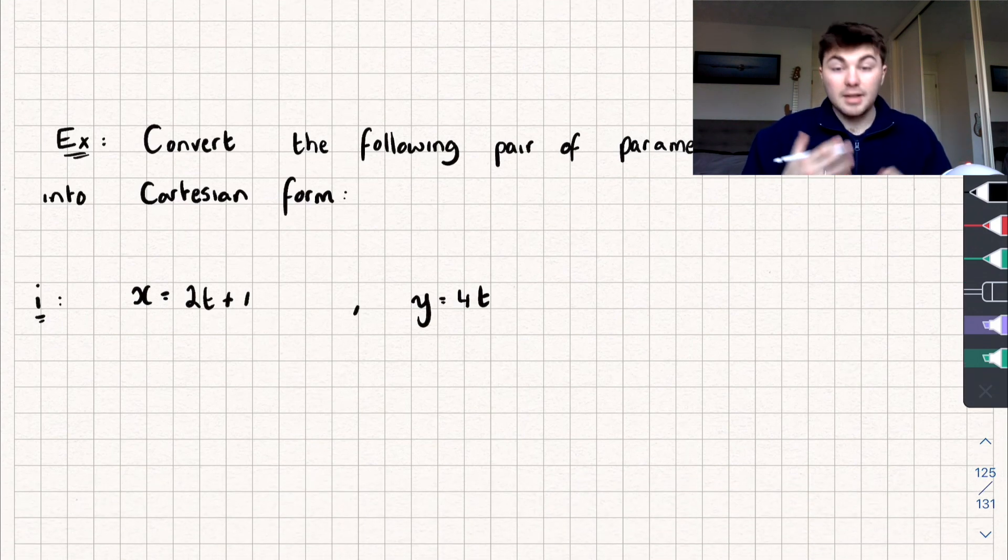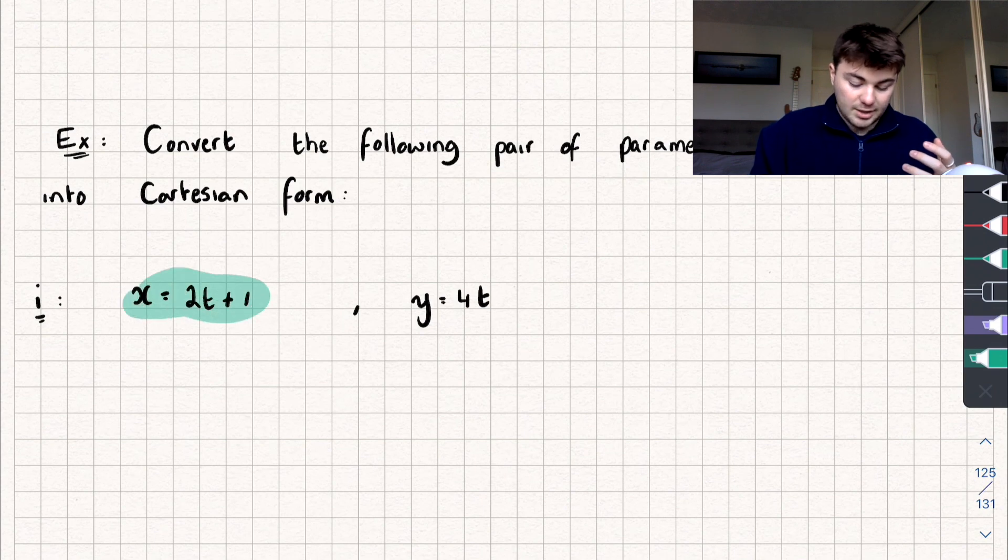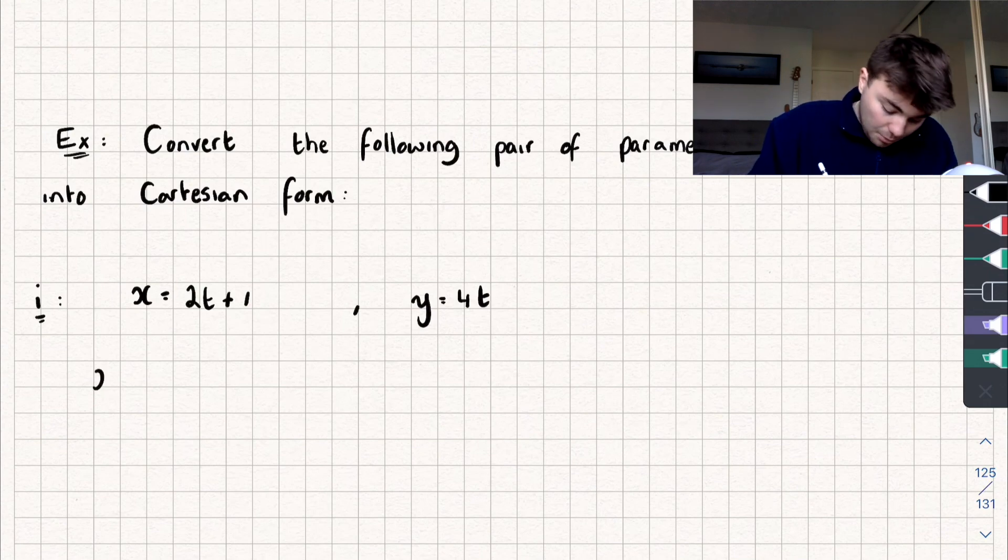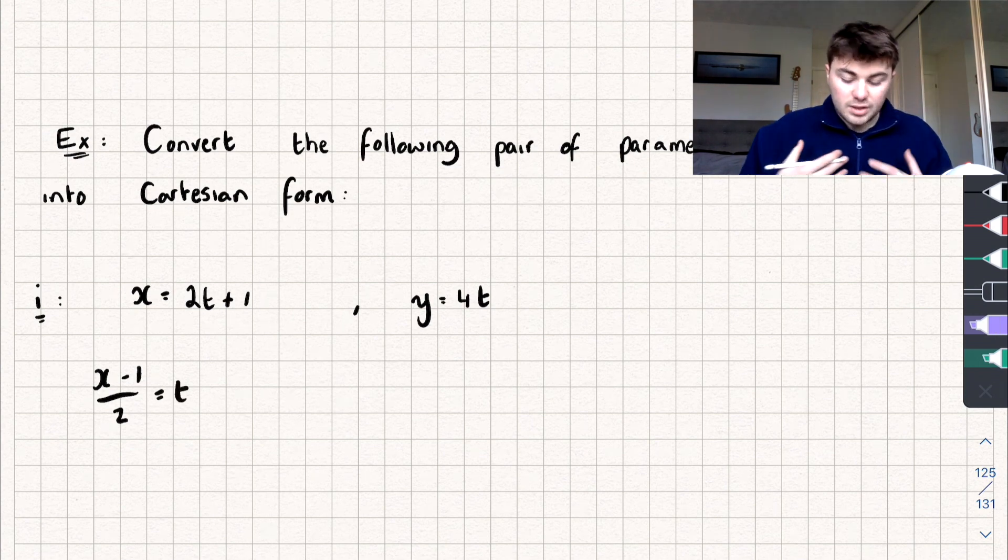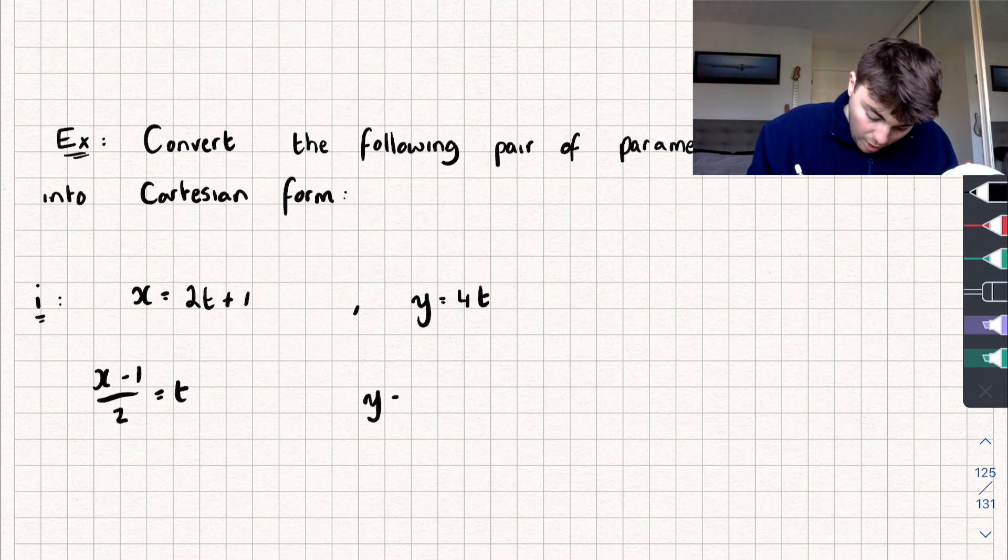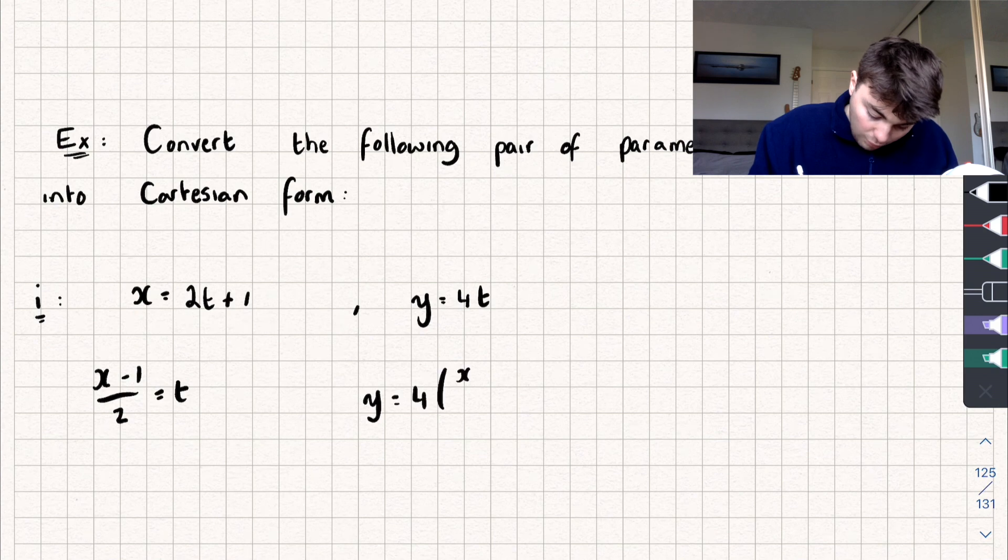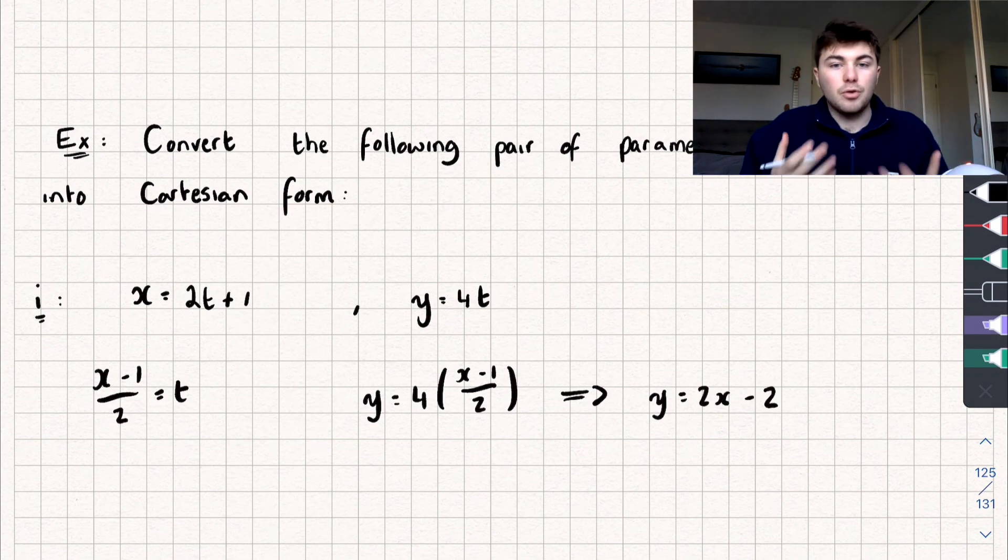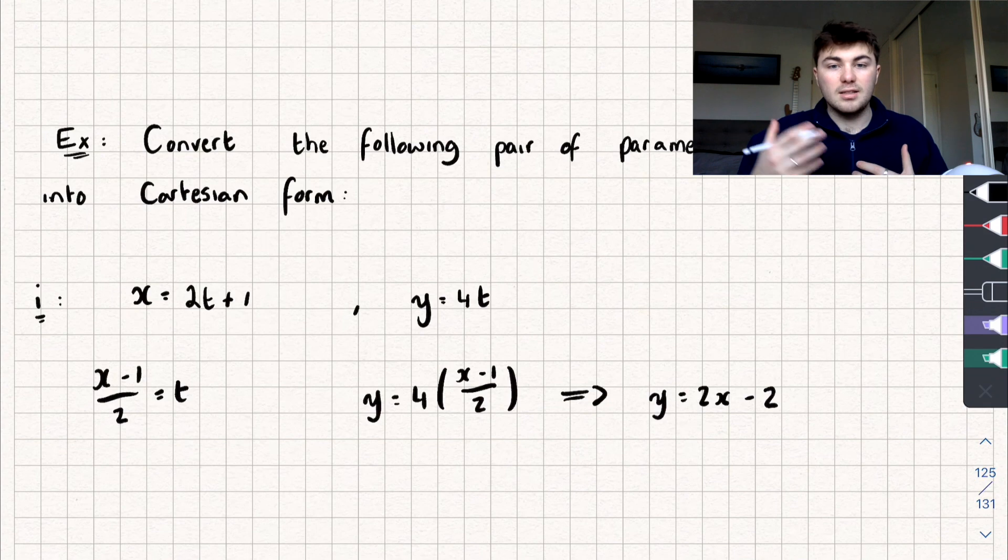We're going to pick one of these, it doesn't matter which one. So say we'll start off with this one, x equals 2t plus 1. We're going to rewrite it to make the parameter the subject. So I'm going to rearrange it to make t the subject. So we've got x subtract 1 divided by 2 is equal to t. Once I've done this, I'm then going to substitute this into my other equation. So I'm going to substitute it in for t there. And if I do that, we get that y is going to be equal to 4 lots of x subtract 1 divided by 2. And if we expand this, we get that y is equal to 2x subtract 2. And you can see pretty easily we've converted this into a Cartesian equation.